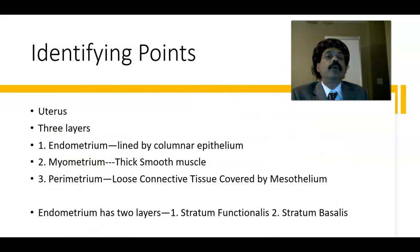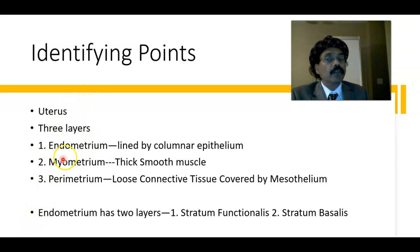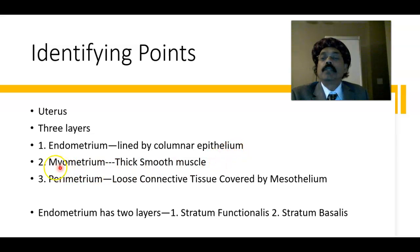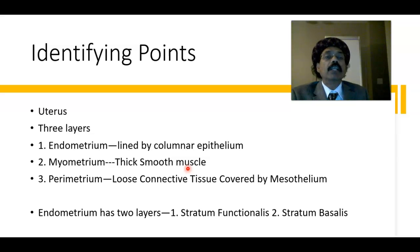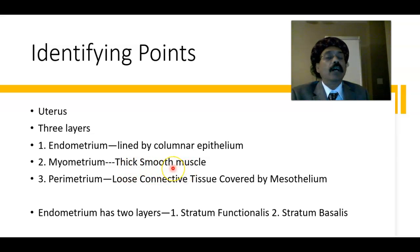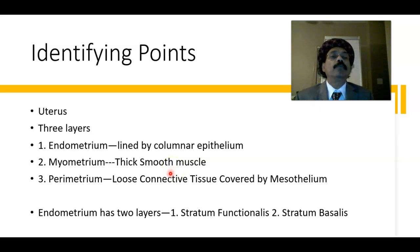What are the identifying points for the histological slide of the uterus? We have three layers. The endometrium is lined by columnar epithelium and some of these cells have cilia. The myometrium has thick smooth muscle with three layers of smooth muscle, mingled together by collagen fibers, forming a very thick layer over the uterus.